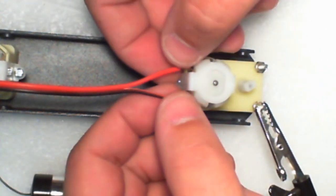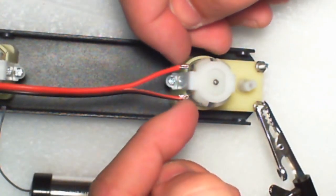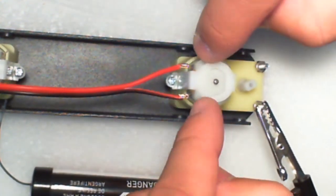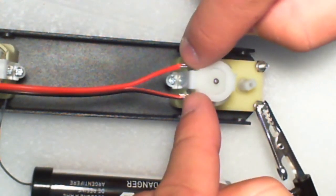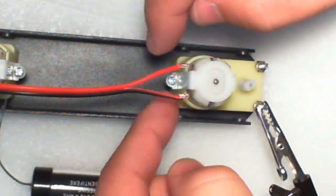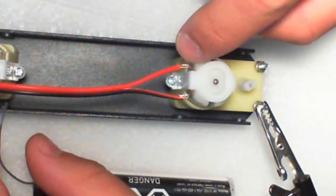Alright, so we're getting ready to solder. What I actually did here is I stripped back the cable just a little bit more. I slipped it through the hole on the connectors here, on the motor, and I just kind of folded it over to give me enough room to solder these on.